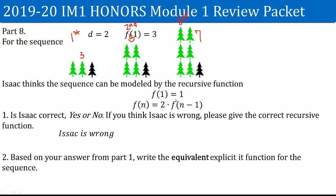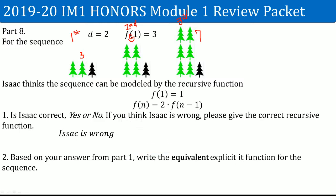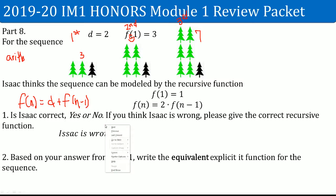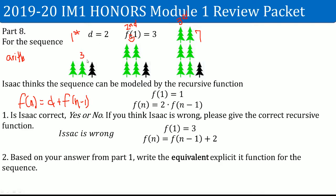In an arithmetic sequence, f(n) is defined by adding the common difference to the previous term. The common difference here is 2. So the correct recursive equation is f(1) = 3, and f(n) = f(n-1) + 2.